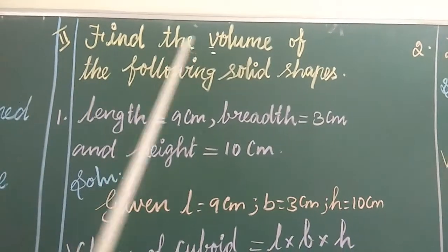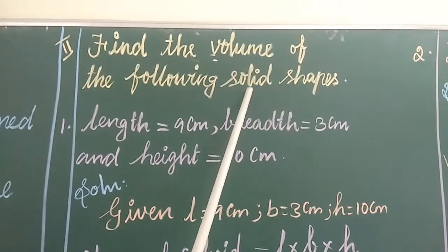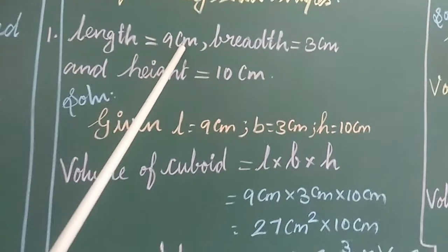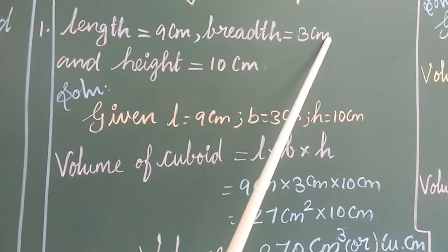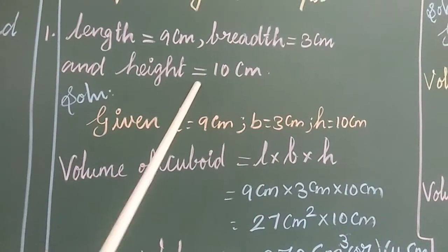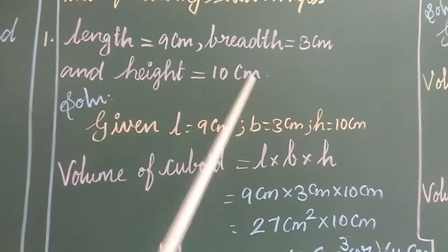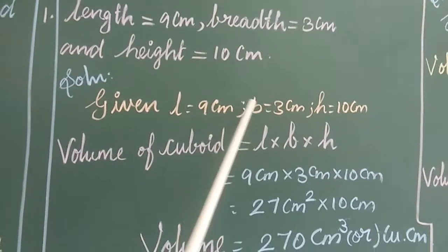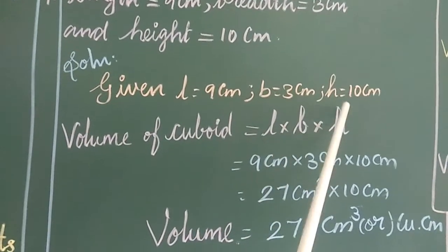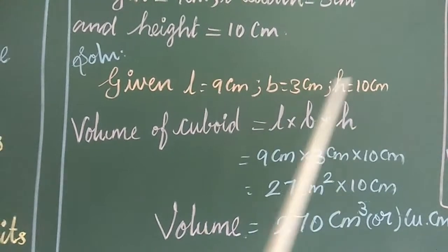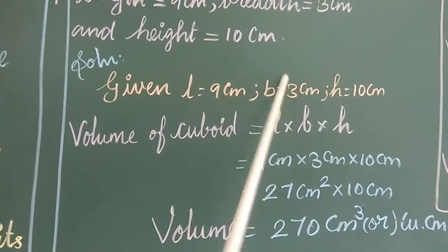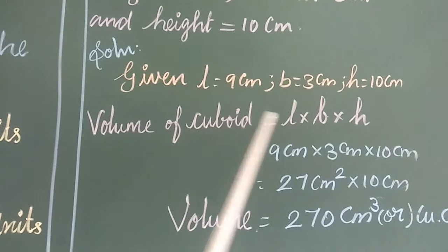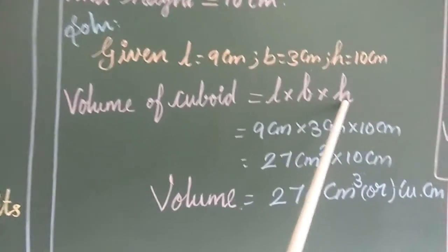The second moment — find the volume of the following. First one: length equals 9 cm, breadth equals 3 cm, and height equals 10 cm. Solution — given: L = 9 cm, B = 3 cm, H = 10 cm. Here we see the same shape — a cuboid.